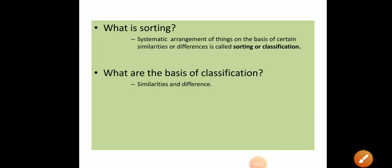Good morning students. Let's start today's class with two questions. The first is: what is sorting? The systematic arrangement of things on the basis of certain similarities and dissimilarities is called sorting or classification. The next is: what are the basis of classification? Similarities and differences are the basis of classification. Those things which are similar will be grouped together and those which have differences will be separated.